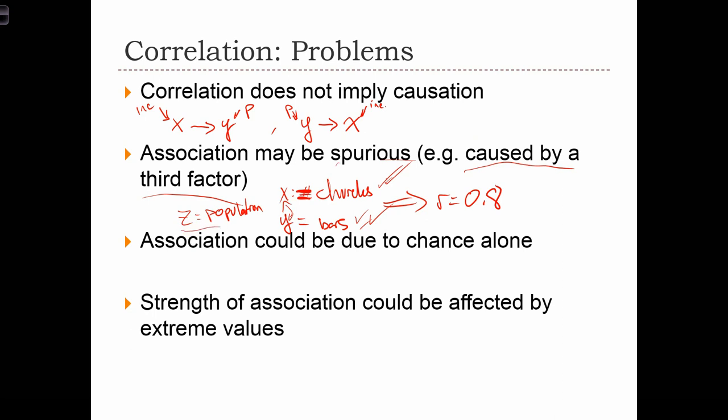We also might have the case where correlation is being caused by chance alone. For example, I might measure the number of people who chew gum in each neighborhood and the number of people who are blonde-haired in each neighborhood. There's some random chance that I conduct a correlation between those two variables and I find that there's some positive or negative relationship there.